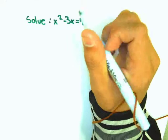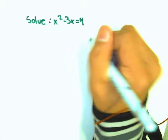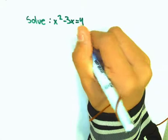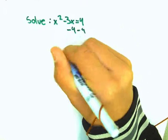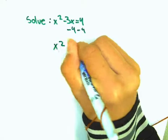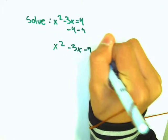Right now we have a quadratic equation, and we want to make this into a trinomial, so we're going to subtract 4 from both sides, and we're going to get x squared minus 3x minus 4 equals 0.